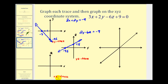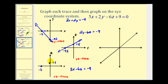And lastly, to find the xz trace, we set y equal to zero, giving us the line three x minus six z equals negative nine. Setting z equal to zero, the x intercept is negative three — which matches what we found earlier. And setting x equal to zero, z would be positive one point five. So we've shown where the plane intersects the xy plane, the yz plane, as well as the xz plane.